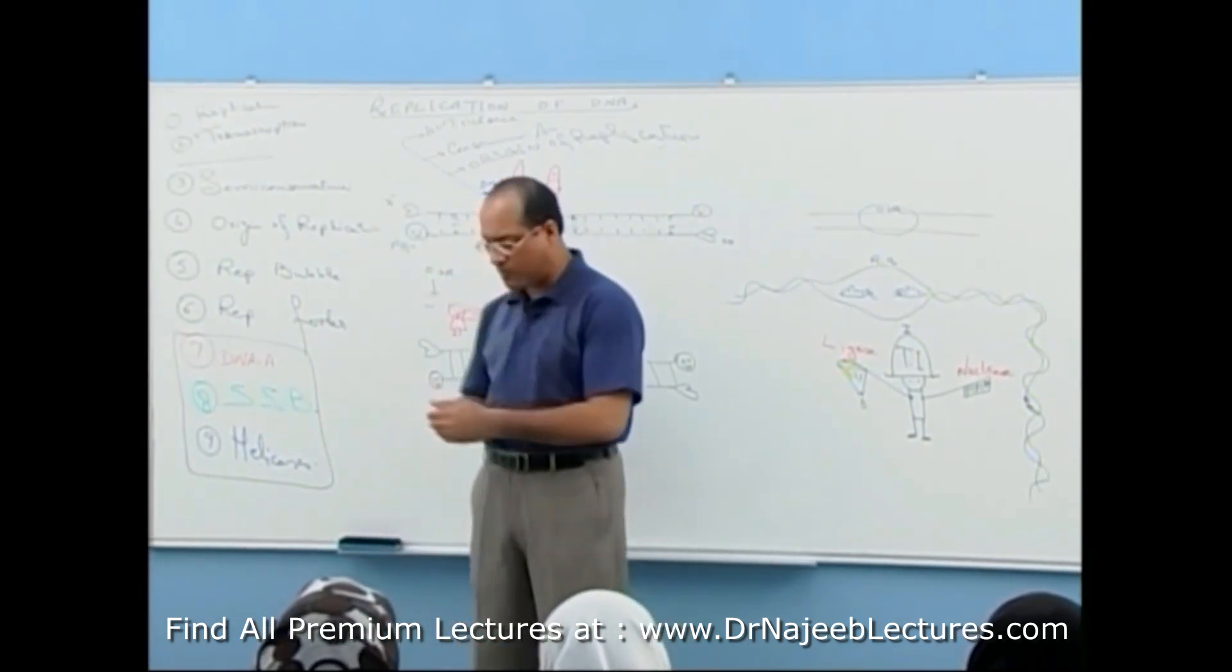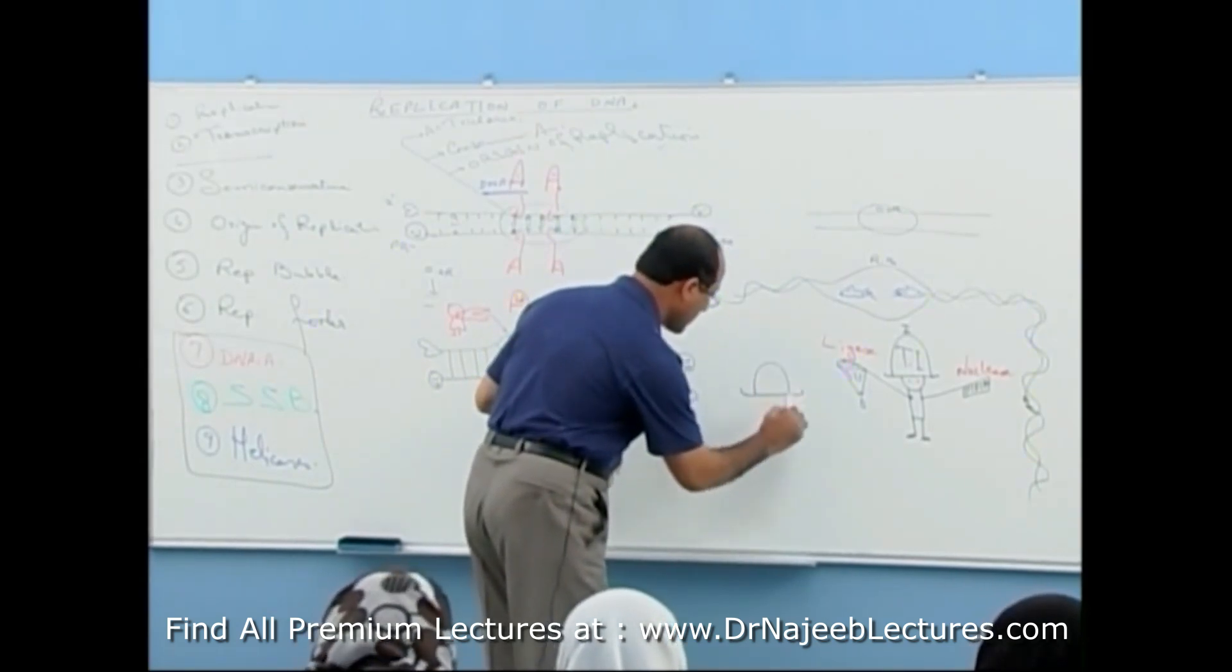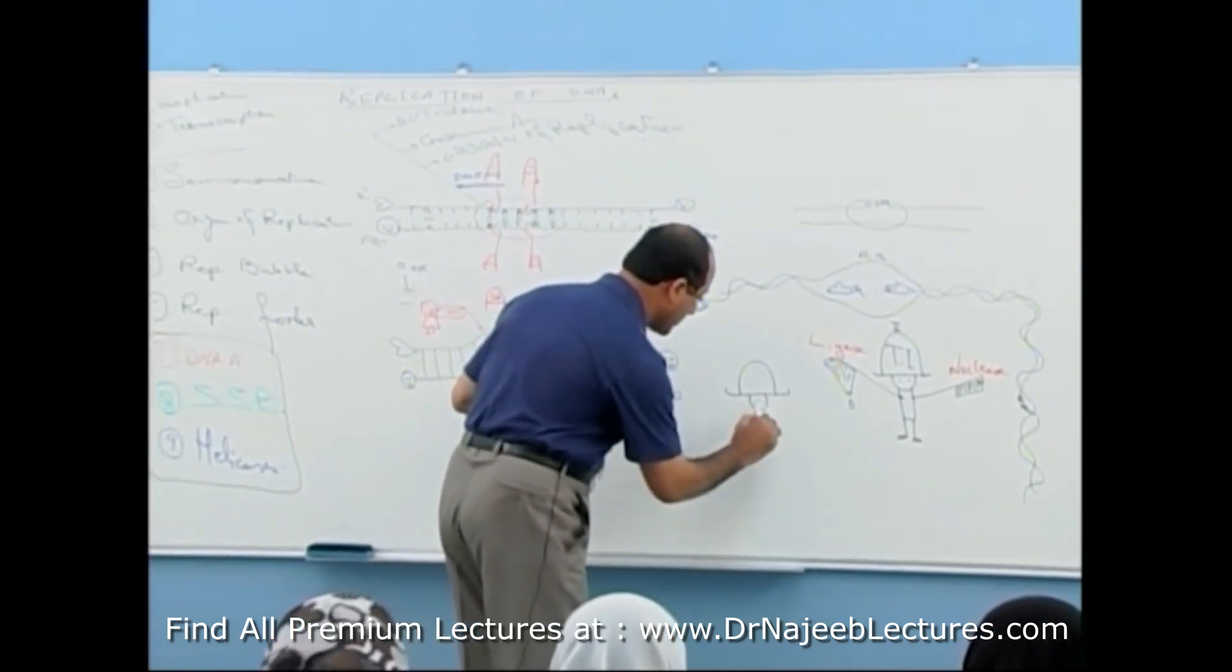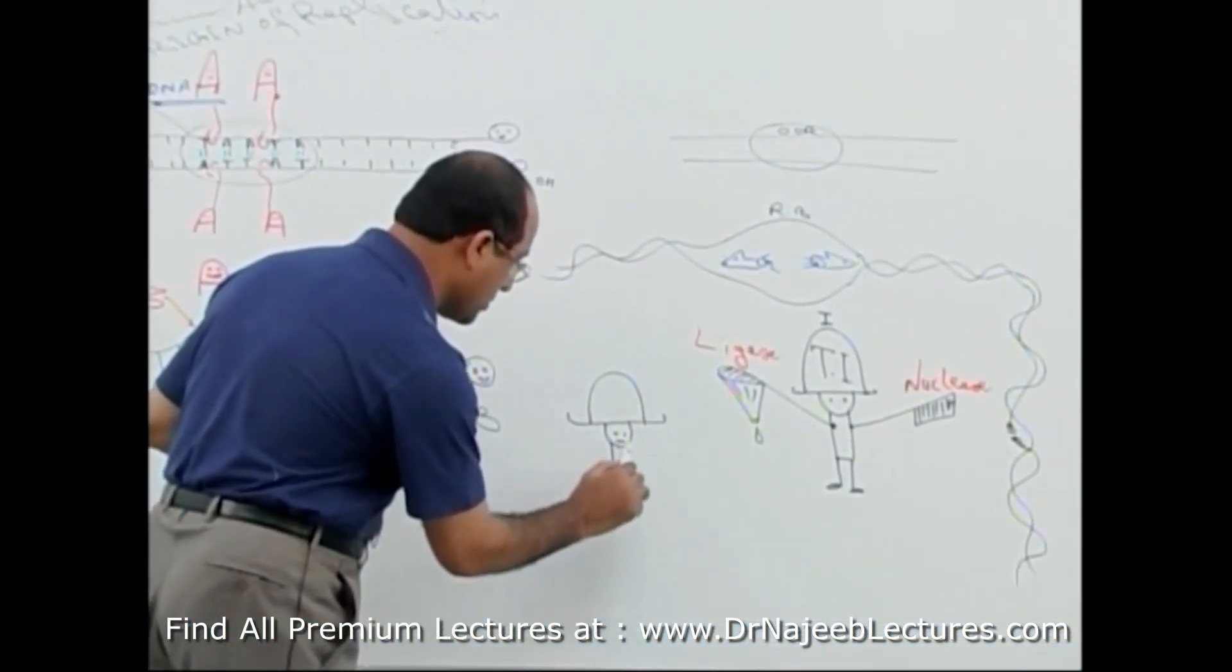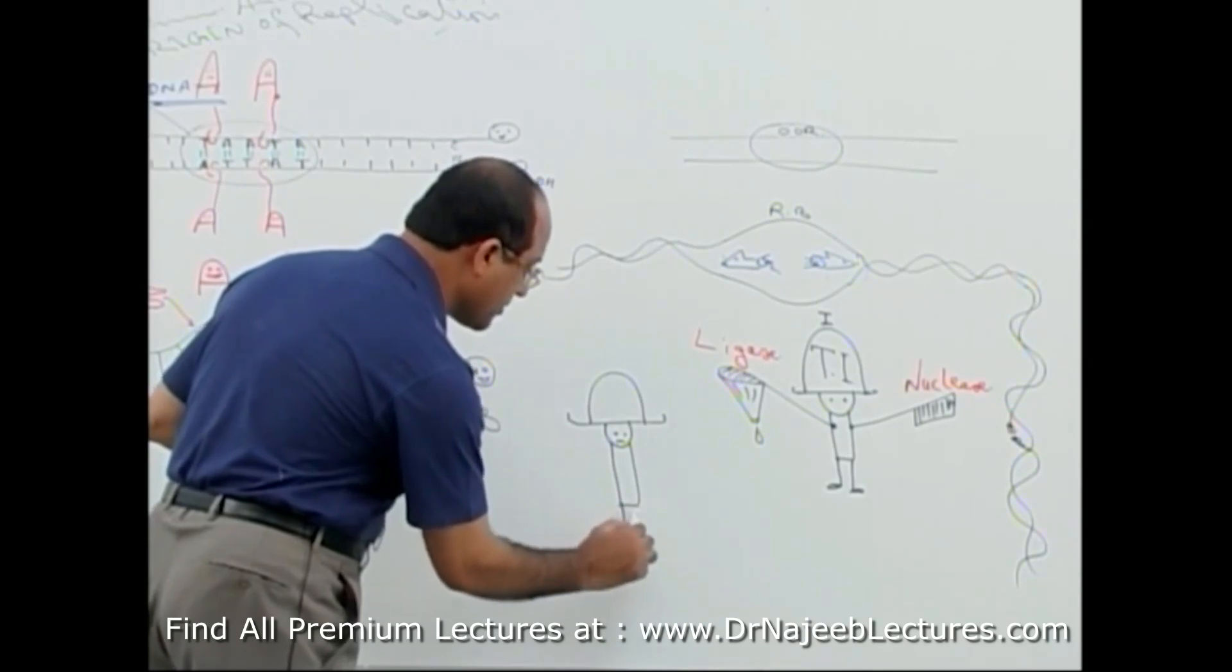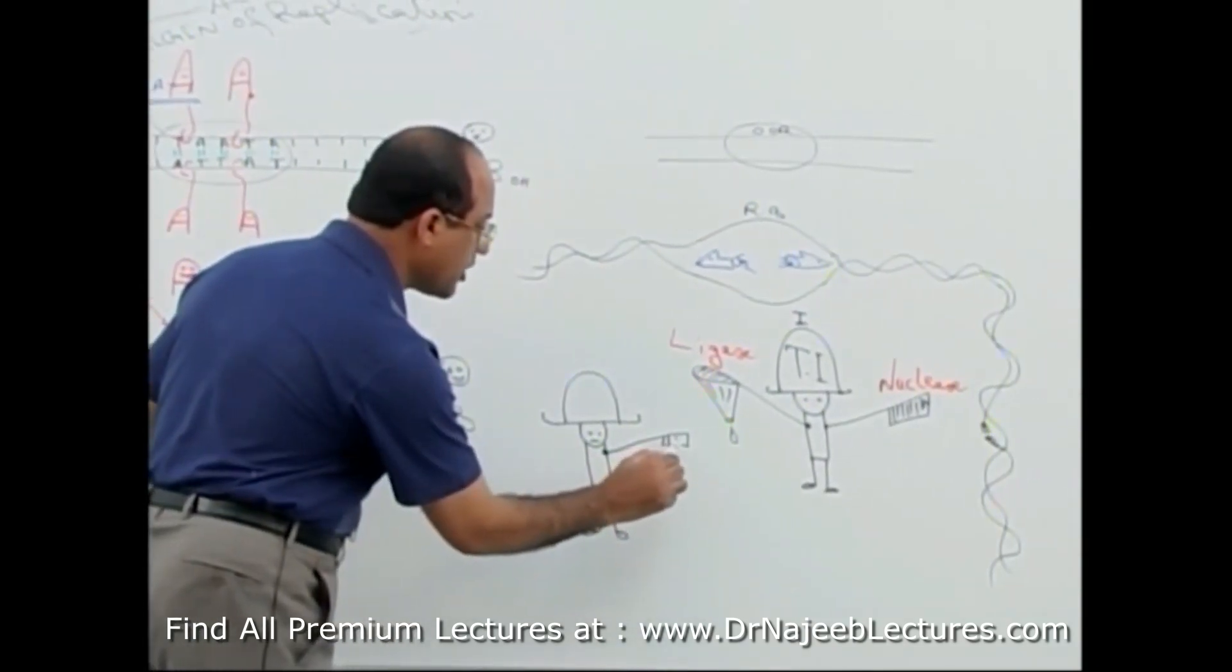For example, here is topoisomerase 2. And this topoisomerase 2 is different than topoisomerase 1. Why is it called topoisomerase 2? Because it has two cutters.